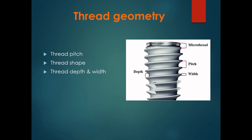The functional surface area per unit length of an implant can also be modified by varying three geometric thread parameters: thread pitch, thread shape, and thread depth and width. We have already discussed these in detail in the implant macro geometry session. An ideal implant thread design should provide a balance between compressive and tensile forces while minimizing shear force generation.